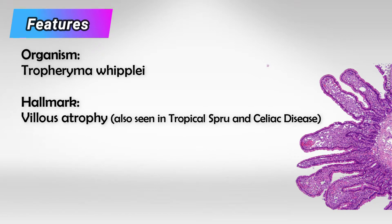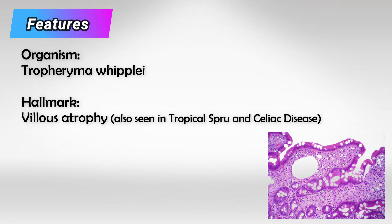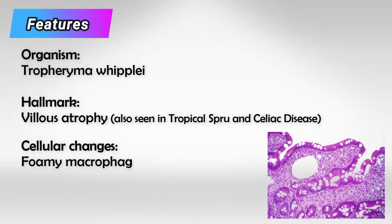The bacteria causes irritation of the lamina propria, which leads to enlargement of the mesenteric lymph nodes and a subsequent attack by macrophages. Once these defending cells reach the lamina propria, the bacteria enters the macrophages but does not provoke an inflammatory response. This prevents the macrophages from killing the bacteria, causing them to inflate and get larger — which is why we see foamy macrophages in the lamina propria in Whipple disease.